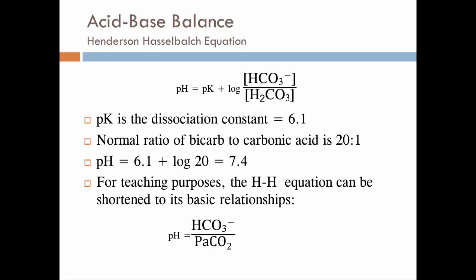Another way to look at this acid-base balance is using this Henderson-Hasselbalch equation. Some of this isn't really necessary, but just so you know, if you remember your chemistry, that pK is the dissociation constant. For this it's 6.1. And the normal ratio of bicarbonates to carbonic acid, remember, is 20 to 1. So if I substitute those values in, I can calculate my pH at that 20 to 1 ratio, which turns out to be 7.4. That is a normal pH. Remember, normal pH is 7.35 to 7.45, so I'm right smack dab in the middle. That's what I want to maintain.